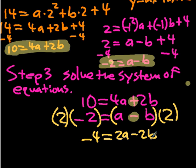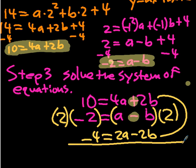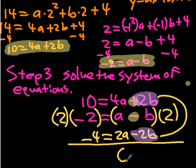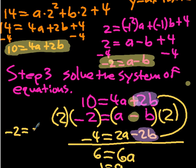I'm now going to add these two equations. The plus 2b and the minus 2b add to zero. The 2a and the 4a add to 6a. And the right-hand side: 10 plus negative 4 equals 6. So 6 equals 6a, which means a equals 1. I can substitute that into any one of my linear equations, so I'll pick the easiest one: negative 2 equals a minus b.